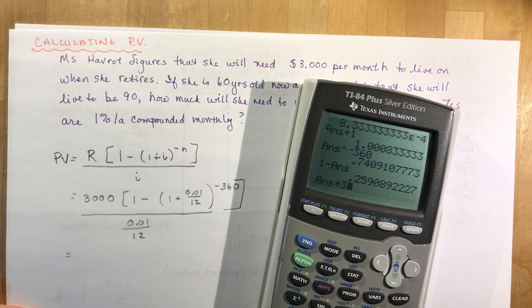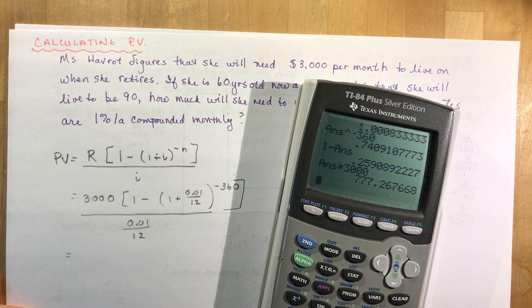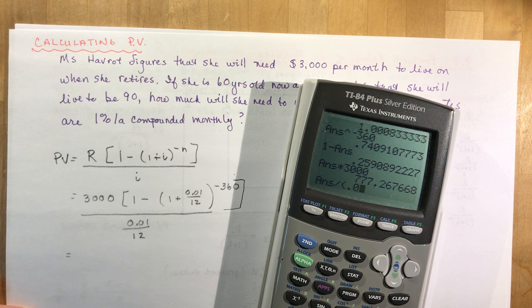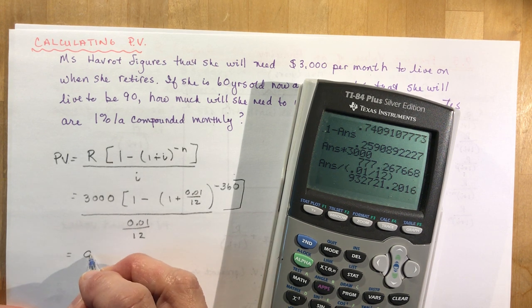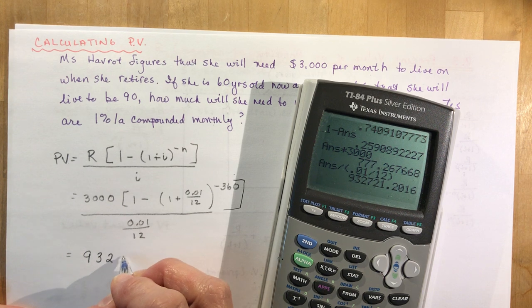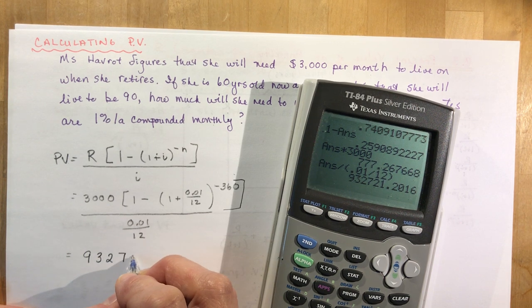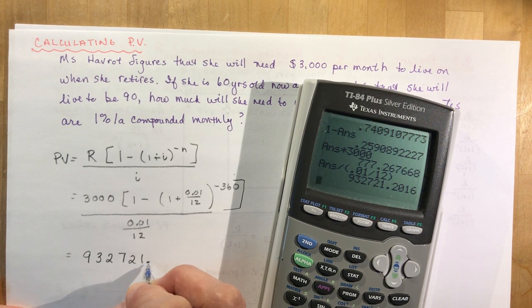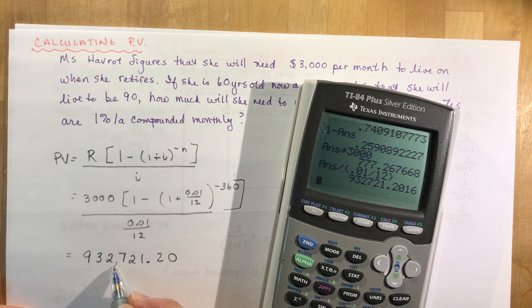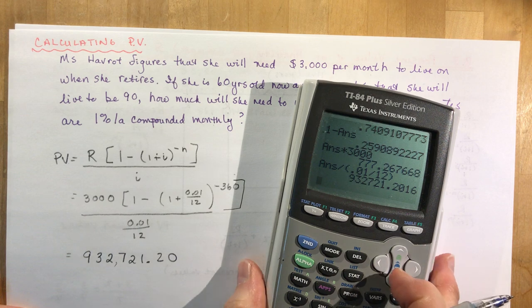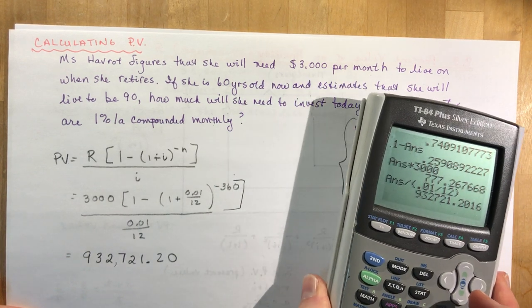That gives me 0.259. I'm going to multiply it by 3,000, that's my R value, and I'm going to divide this by bracket 0.01 divided by 12 close the bracket and I get $932,721.20. So that's $932,000, that's an awful lot of money.